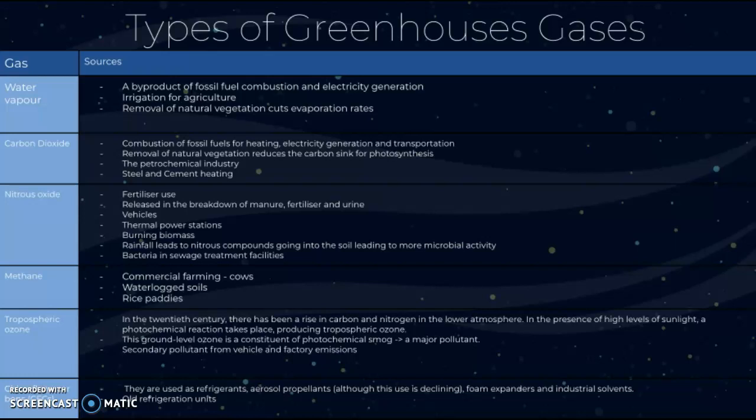Finally, we have chlorofluorocarbons (CFCs), which are used as refrigerants, aerosol propellants, foam expanders, and industrial solvents. The use of CFCs is actually declining — they were common in old refrigeration units, but that has been discontinued because of their known impacts on the earth and the greenhouse effect. These are the main greenhouse gases and their sources.